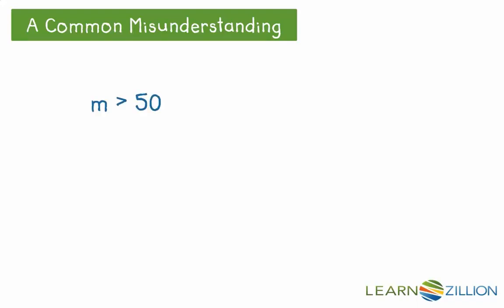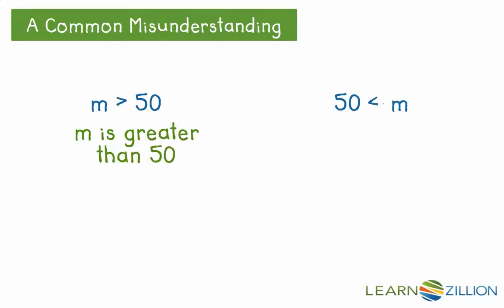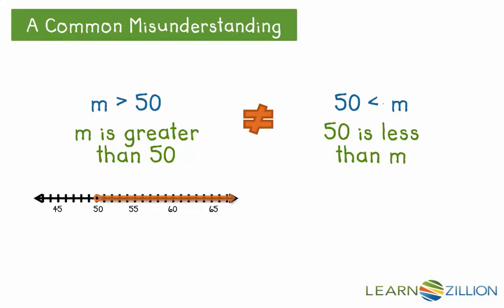One common misunderstanding is to think that the variable must be on the left side of the inequality sign. This leads students to think that m is greater than 50 is not equal to 50 is less than m, and that 50 is less than m can't represent our situation. But let's look at the graphs. For m is greater than 50, we have an open circle and shade all values greater than 50. For 50 is less than m, the open side of the inequality points toward m, so m is bigger than 50, and the graph looks the same.